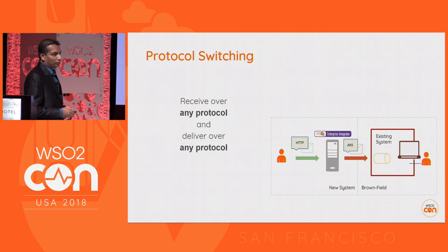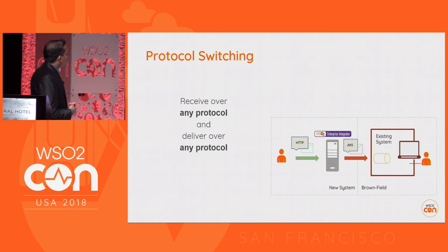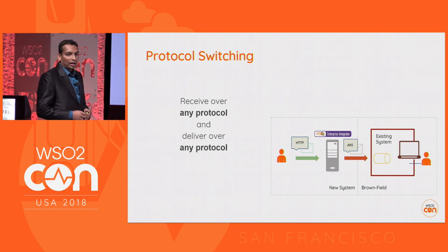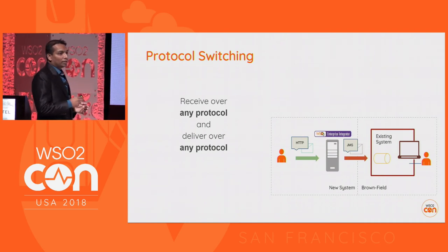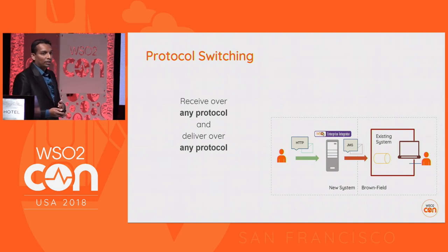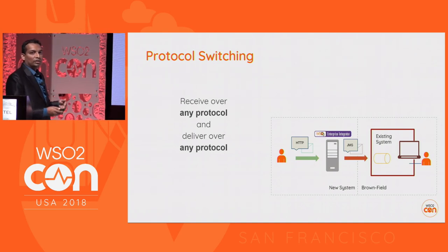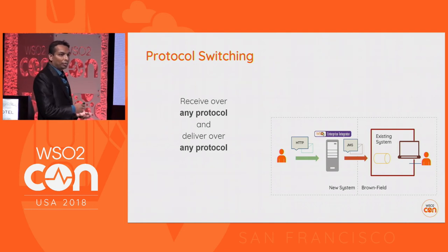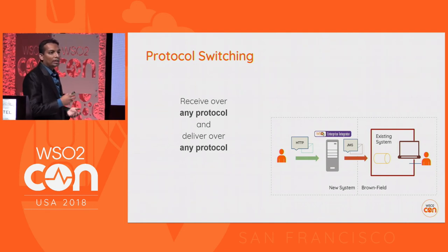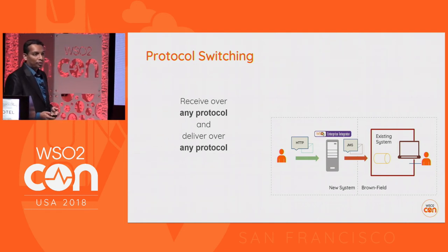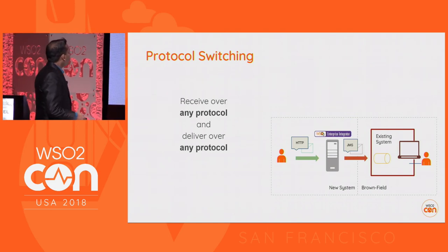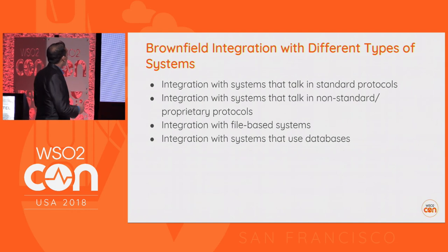Next, the protocol switching capability. The ESB or Enterprise Integrator has a layered architecture where the message-receiving part and the message-delivering part are fully decoupled. Because they are fully decoupled, we can simply receive over any protocol and deliver it over any protocol.